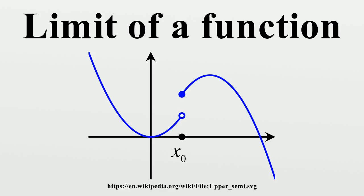The accuracy goal is then changed: can she get within 1 vertical meter? Yes. If she is anywhere within 7 horizontal meters of P, then her altitude always remains within 1 meter from the target L. In summary, to say that the traveller's altitude approaches L as her horizontal position approaches P means that for every target accuracy goal, however small it may be, there is some neighborhood of P whose altitude fulfills that accuracy goal.